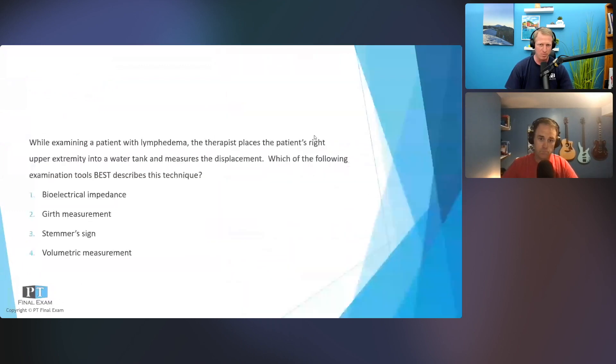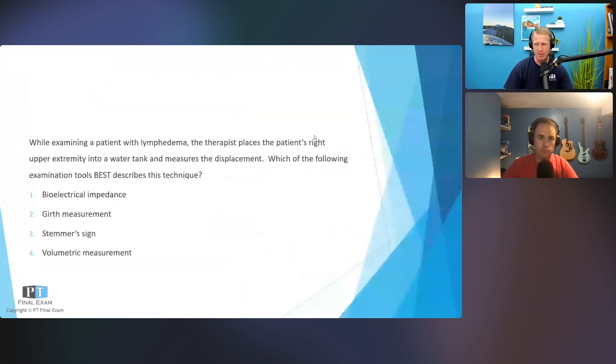Here's your question: While examining a patient with lymphedema, the therapist places the patient's right upper extremity into a water tank and measures the displacement. Which of the following exam tools best describes this technique? One: bioelectrical impedance. Two: girth measurement. Three: Stemmer sign. Or four: volumetric measurement.